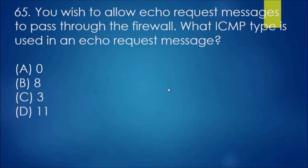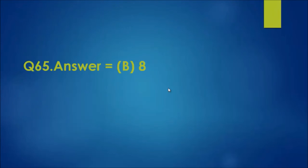Question 65: You wish to allow echo request messages to pass through the firewall. What ICMP type is used in an echo request message? This is another one of those rote learning questions. It's type 8. ICMP type 8 is used for echo requests.